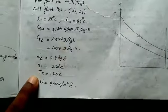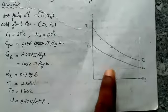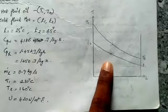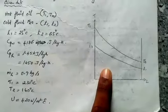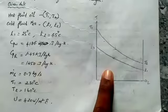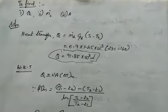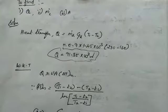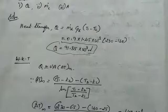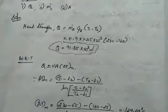We note M, T1, T2, U. We set up the counter flow heat exchanger temperature distribution. We find q1, mass flow rate of cold fluid, and area. Q is equal to QC = QH.